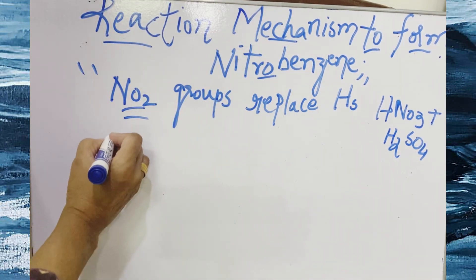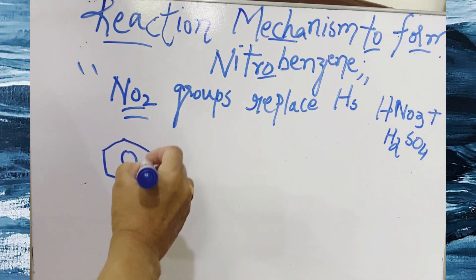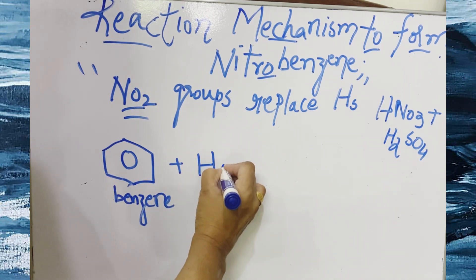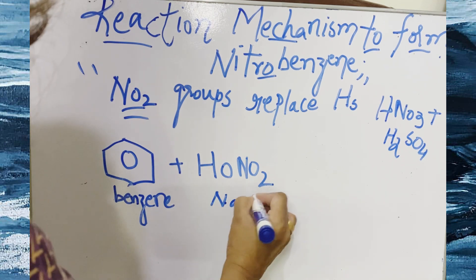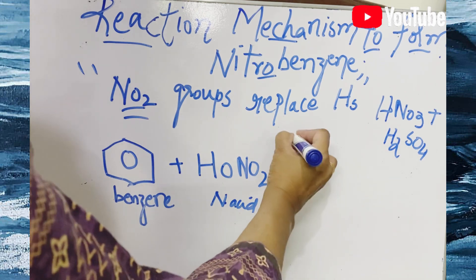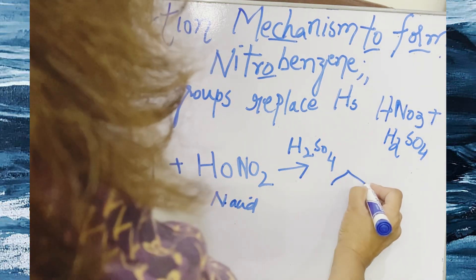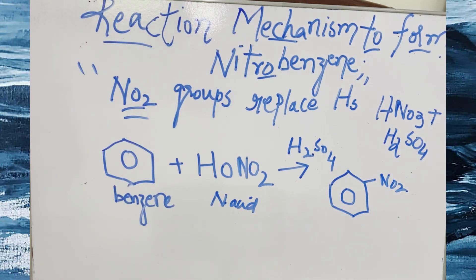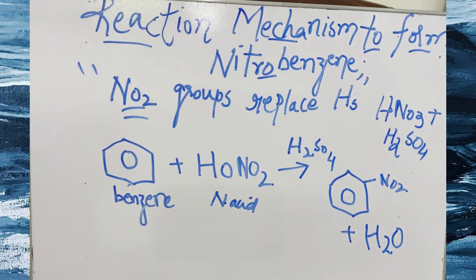Now, how does this reaction go on? I will tell you. This is benzene, this is a benzene ring. It reacts with HNO3, nitric acid, with the presence of concentrated sulfuric acid. What happens after this? You will get a nitro product, NO2, that is nitrobenzene, and with the expulsion of water molecule H2O. This is the simplest equation to understand nitration, how nitrobenzene is formed.